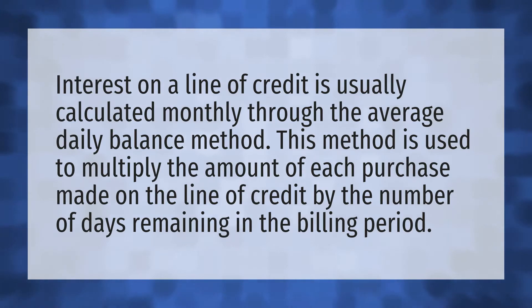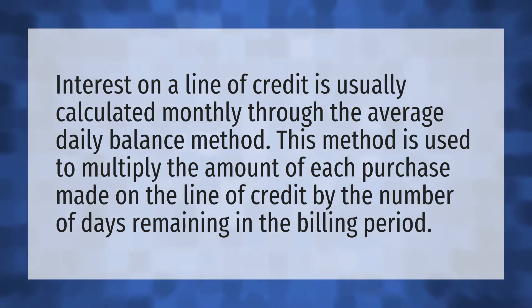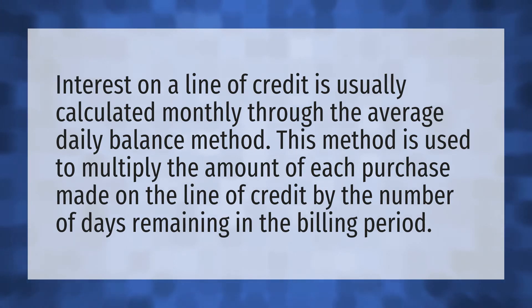Interest on a line of credit is usually calculated monthly through the average daily balance method. This method is used to multiply the amount of each purchase made on the line of credit by the number of days remaining in the billing period.